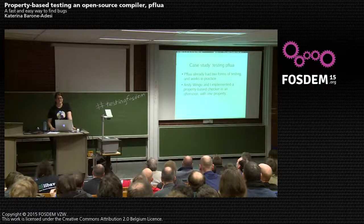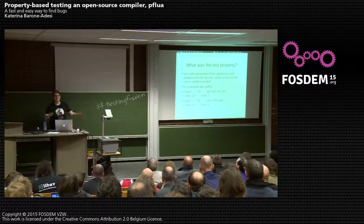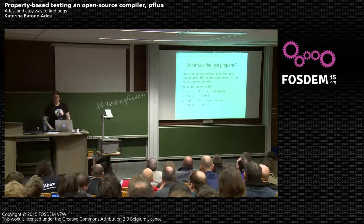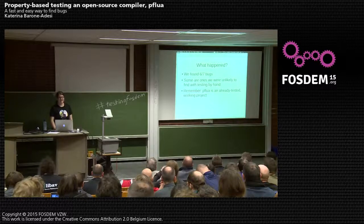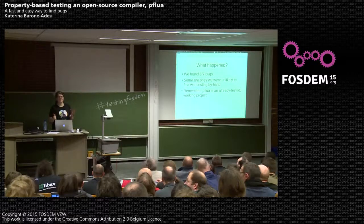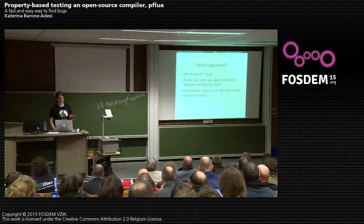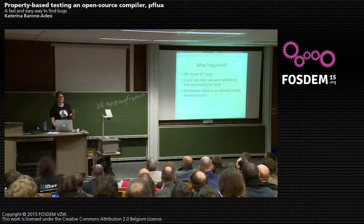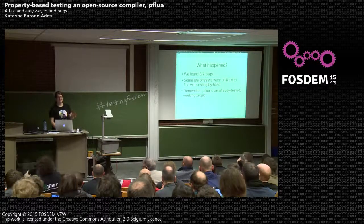When I started at Igalia, I looked at the testing and said OK, we have tests — let's add property-based tests. Andy Wingo said OK. So we sat down and wrote a property-based tester in one afternoon with one property: take the intermediate representation of our program, throw our optimizer at it, then test the optimized and unoptimized versions against a random packet and see if they both match or both don't match. If they don't, we have a bug. On this working, tested code, we found six bugs that afternoon — and a seventh later — several of which we were unlikely to find by testing by hand.